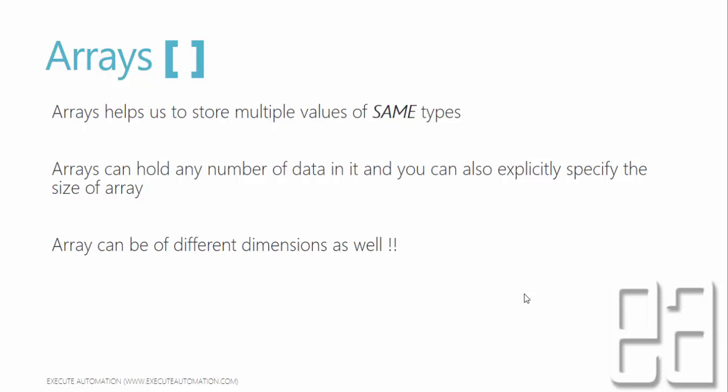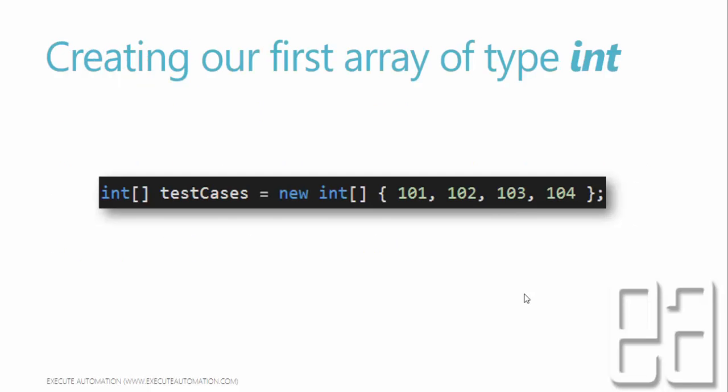Just to keep it very simplified: arrays help us to store multiple values of the same type. For example, if we create an integer type array, the code looks something like this: int[] testCases = new int[] { 101, 102, 103, 104 }. Remember there's a square bracket open and close for the array declaration, and you use the new keyword — just like when we were talking about classes.